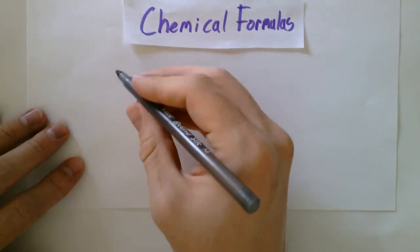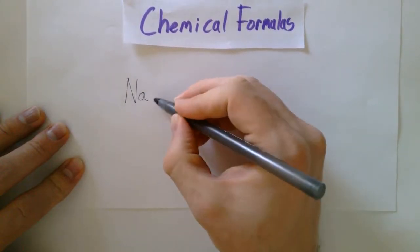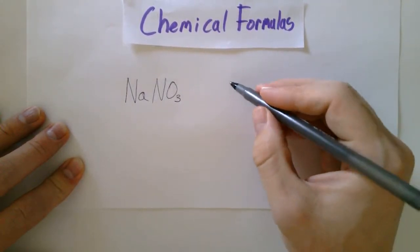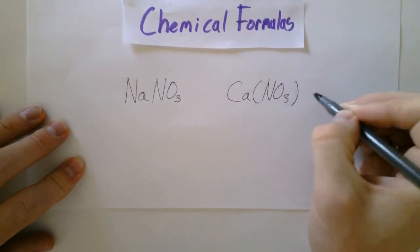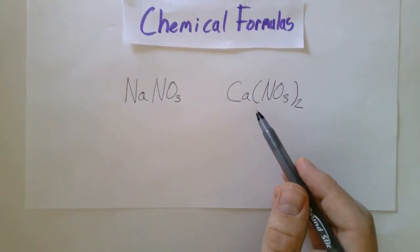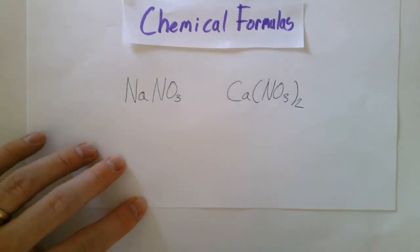So with these next two chemical formulas, I want to show you what parentheses mean. So here's sodium nitrate, and here's calcium nitrate. Now what you can see is that there's parentheses on this one, and there are not parentheses here.